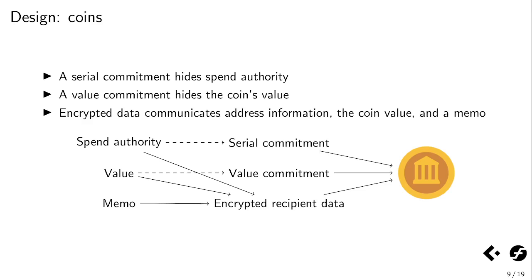Let's talk about the overall 30,000-foot design of Spark, starting with the design of coins — you might see these referred to as outputs or notes in other projects. The idea is that we have two commitments that hide different aspects of the coin's value and identity. There's a serial commitment, which hides the spend authority — effectively who can spend the coin later. There is a value commitment that hides the value. Then there's encrypted recipient data, which includes information about the spend authority so the recipient can recover it to spend the coin, the value so the recipient can view and later spend it, and additional arbitrary data like plaintext memos for human-readable purposes. There are also range proofs necessary to make the design work.